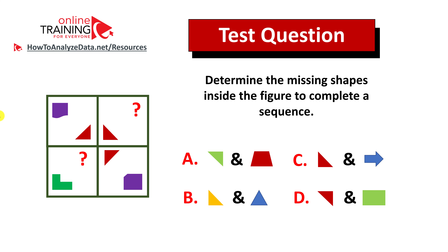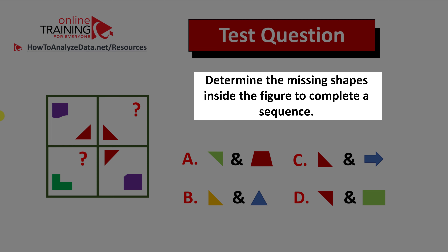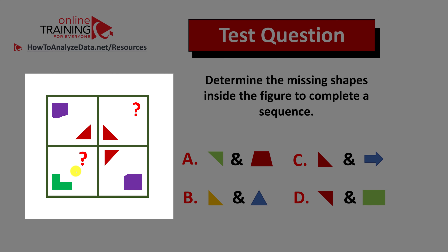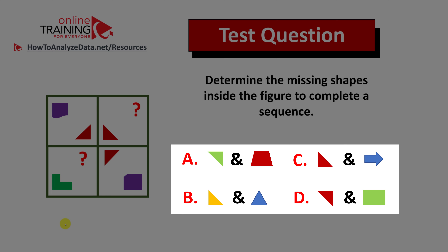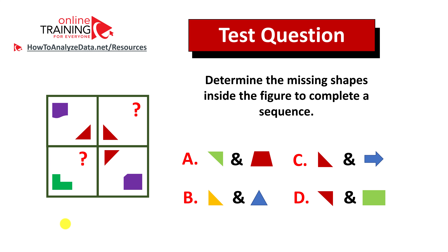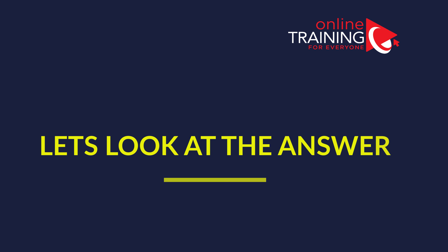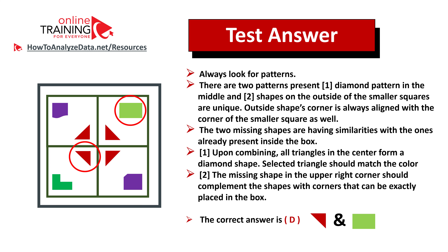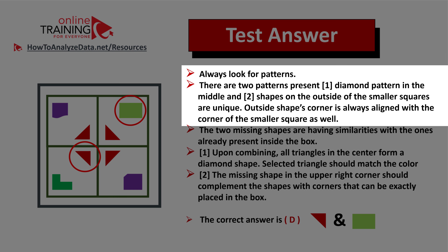Let's look at an interesting question which tests your pattern recognition skills. Determine the missing shapes inside the figure to complete the sequence. You're presented with a two by two figure with two missing shapes, and four possible choices: A, B, C, and D. To solve these types of problems, you need to look for patterns. There are two patterns here: number one is the diamond pattern in the middle, and number two is the pattern of unique shapes on the outside of the smaller squares.